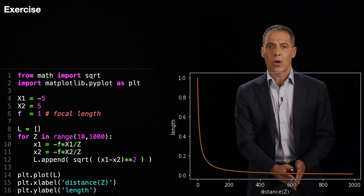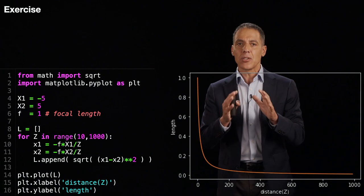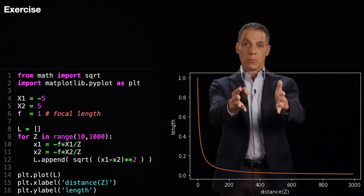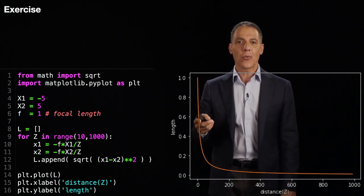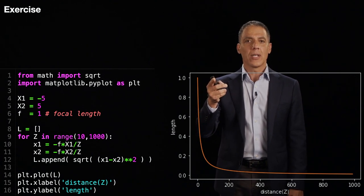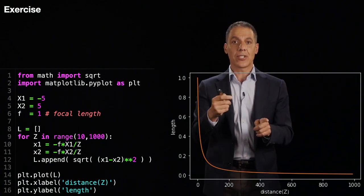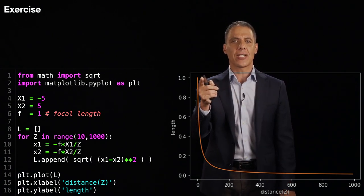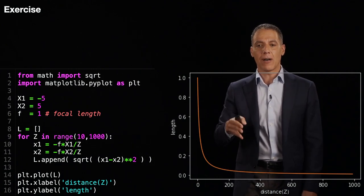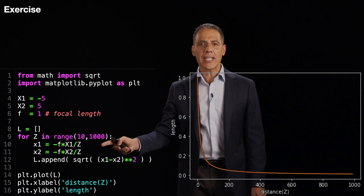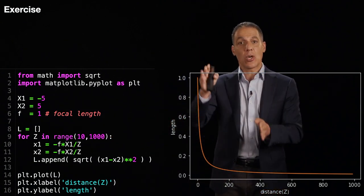The horizontal axis shows distance from 10 to 1000, and the vertical axis shows the projected length of the 1D line. The segment in the world is always 10 units long, but its projection changes. It starts at 1 — which makes sense: 10 units long at distance 10, divided by focal length 1, gives 1. It then falls off very quickly, not linearly but with a harsh non-linearity, because we're dividing by Z when projecting.